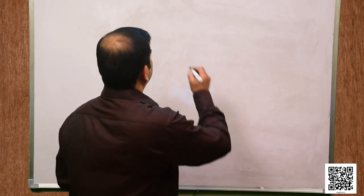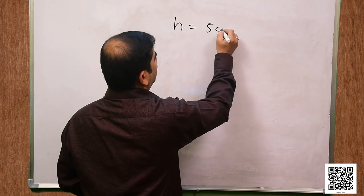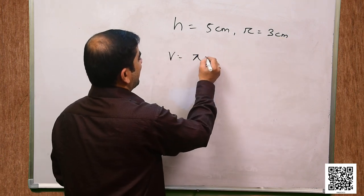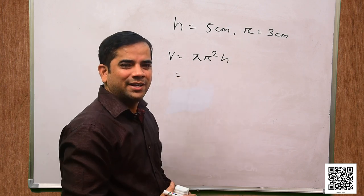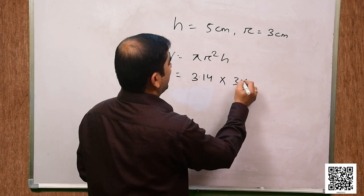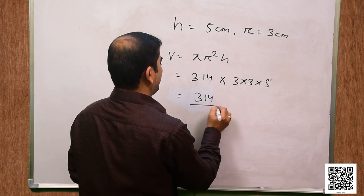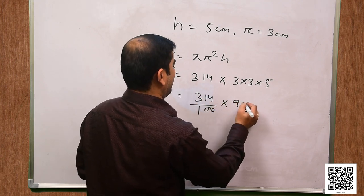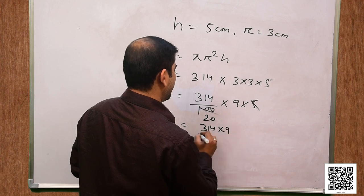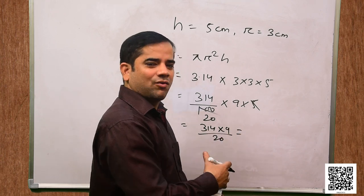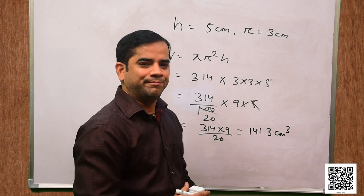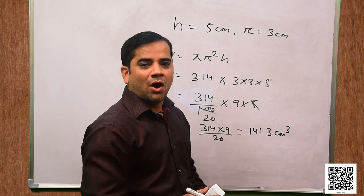Let us now find the volume. Height = 5 cm and radius = 3 cm. Volume = πR²H = 3.14 × 3 × 3 × 5 = (314/100) × 9 × 5. When we calculate it comes to 141.3 centimeter cube. This is the volume of the cylinder.